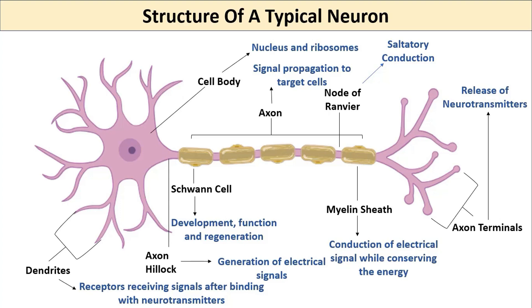To summarize: you receive the signal via receptors present in the dendrites in the form of chemicals. Then you generate an electrical signal at the junction point called the axon hillock, and propagate it using the axon.